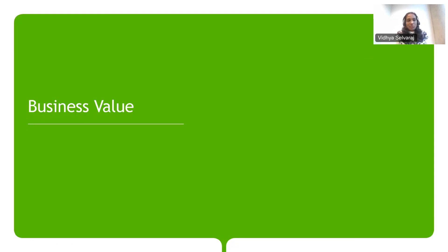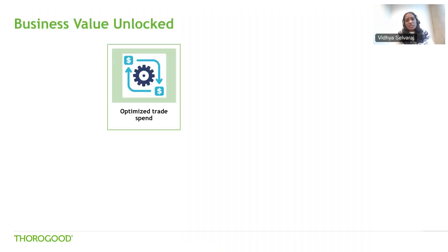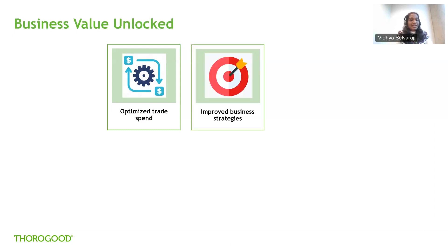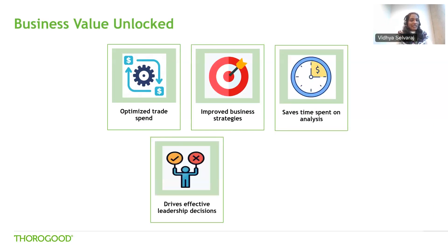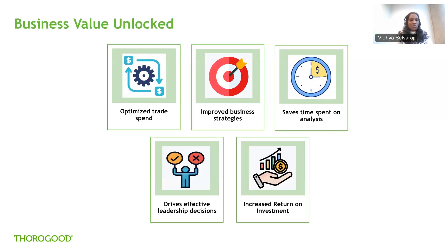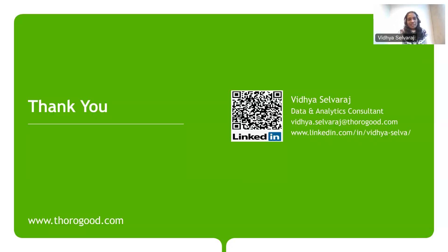So we've looked at the TPA tool, the different analyses it can perform, and the predictions it can make. In terms of business value, consumer goods companies spend up to 20% of their revenue on trade promotions every year, so increasing the effectiveness of such promotions helps the company retain more profit. The TPA tool will help you optimize trade spend, give you improved business strategies, save time spent on analysis, drive effective leadership decisions, and increase your return on investment. That's all we had for today — thank you and hope to speak to you soon.